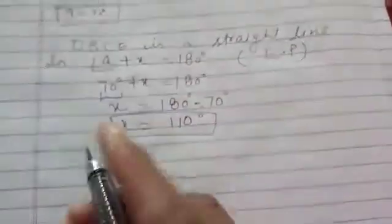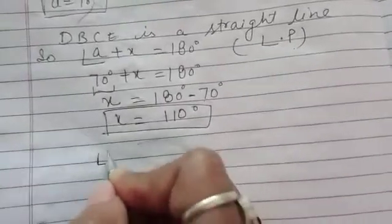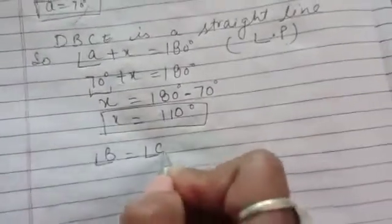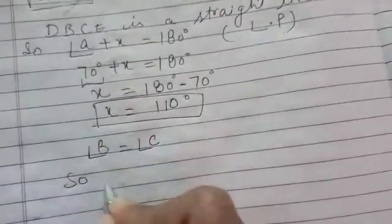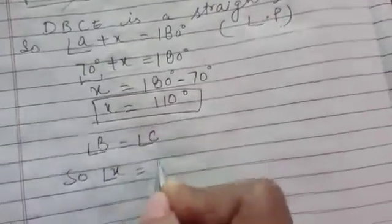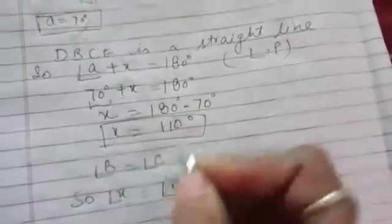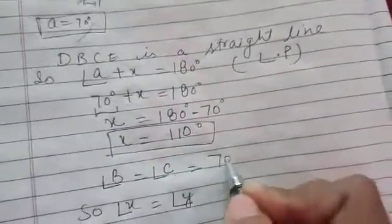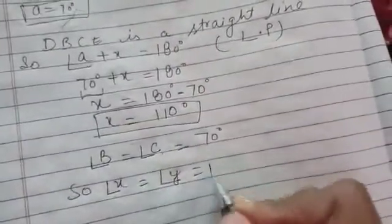Now you can write angle b equals angle c, so angle x equals angle y. Who was equal to b? It was 70°. So the angles x and y are 110°. That is the required answer.